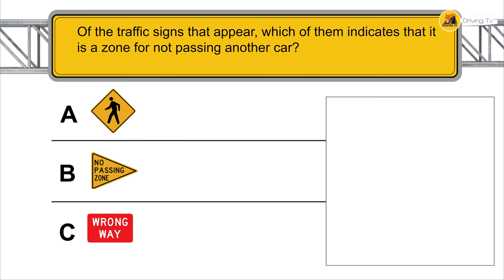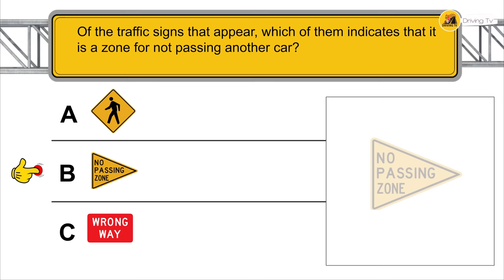Of the traffic signs that appear below, which of them indicates that it is a no-passing zone?